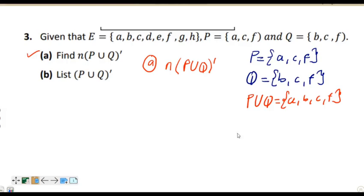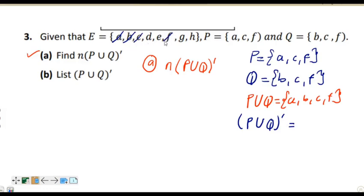From there, we need to find (P union Q) complement. This means the elements that are in P union Q are not going to be part of the solution set for (P union Q) complement. In P union Q we have A, B, C, and F. We need to get rid of these elements from the universal set — remove A, B, C, and F. The remaining elements in set E after removing A, B, C, and F give us our (P union Q) complement.